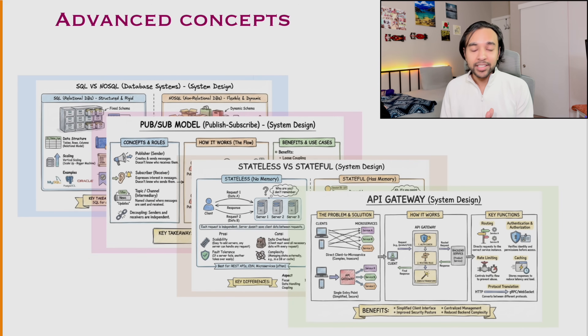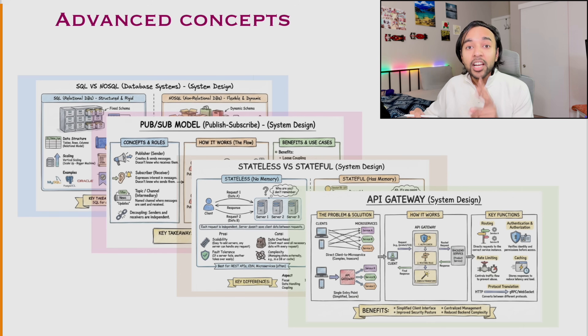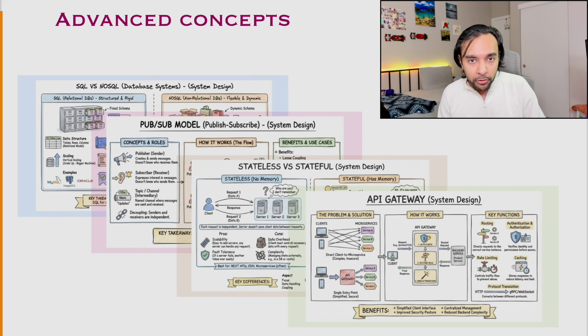Things don't end there. The free pack covers all of the fundamentals and honestly it alone should help you out a lot. But if you want to dig deeper and cover almost every topic — like the pub-sub model, consistent hashing, API gateways, ACID properties, BASE properties, distributed systems, big data — I have also created the advanced pack. Same beautiful visual format, same intuitive design, just more topics. In fact, this advanced pack covers 20 extra topics beyond the fundamentals already available for free.